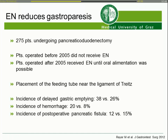Enteral nutrition also reduces gastroparesis. In a retrospective study in humans undergoing pancreatic surgery, the first group operated before 2005 did not receive enteral nutrition, while the second group received enteral nutrition until oral alimentation was possible, with the feeding tube placed near the ligament of Treitz. The incidence of gastroparesis was lower in the enterally fed group, and there was also a significant reduction of hemorrhage, though no difference in postoperative pancreatic fistula.